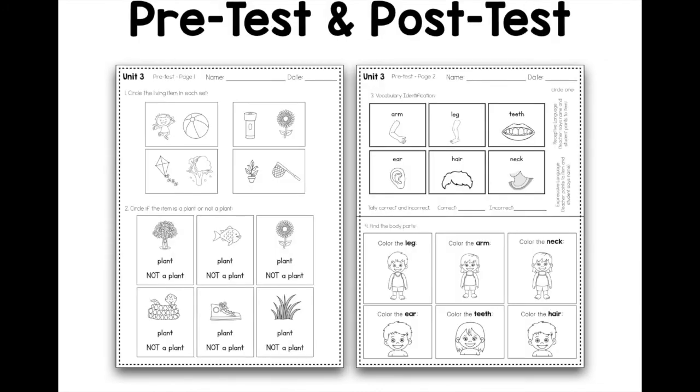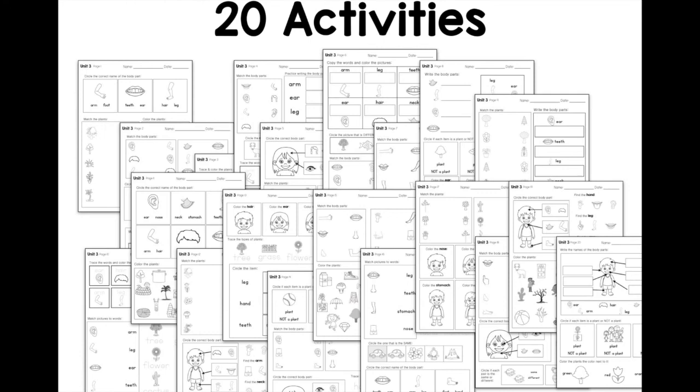The pre and post test—here's a little example of these. The vocabulary can be used with students who are nonverbal by assessing receptive language, and there are instructions on how to do that. Then there are the 20 activities for each unit. Level one has a lot of circling, matching, discrimination activities, sorting, categorizing, things like that.